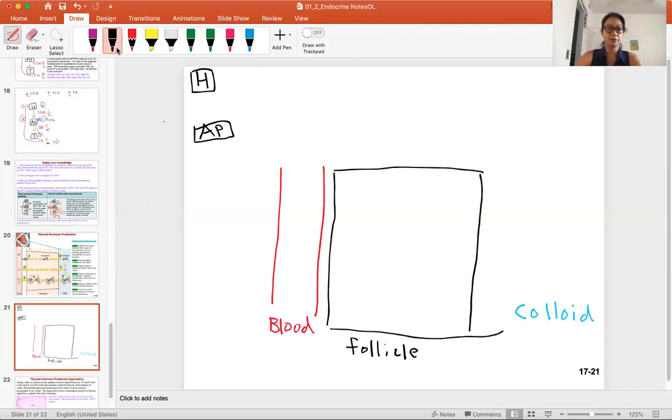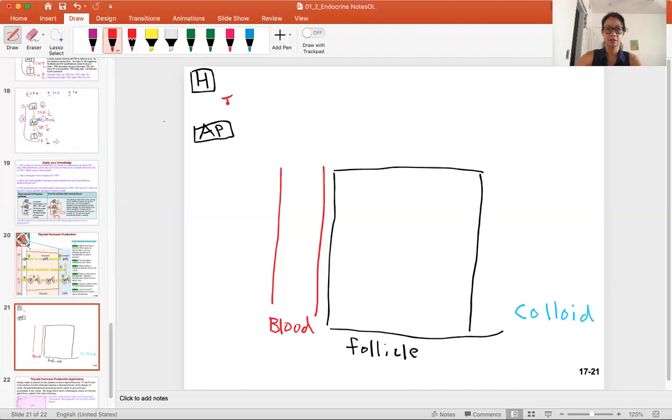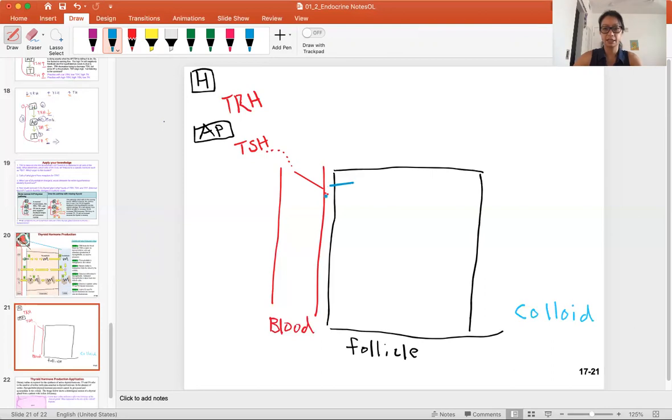We already know that we have TRH secreted by the hypothalamus to bind to the pituitary gland to make TSH. TSH is sent into the blood. That TSH in the blood is going to bind to the TSH receptor.